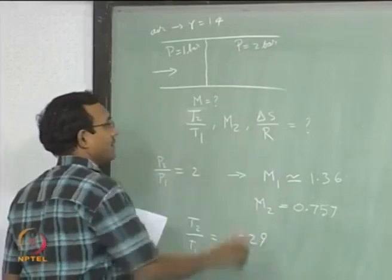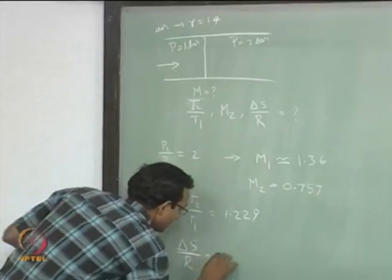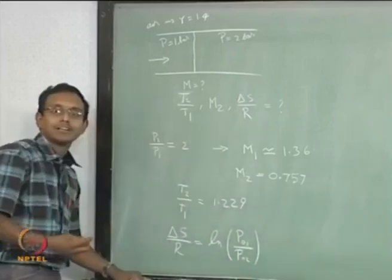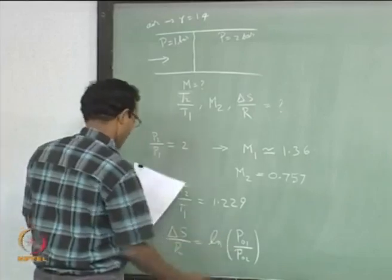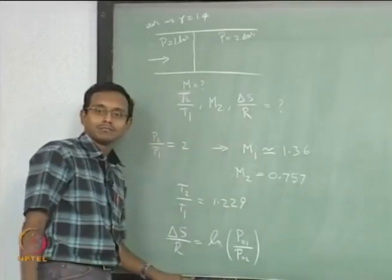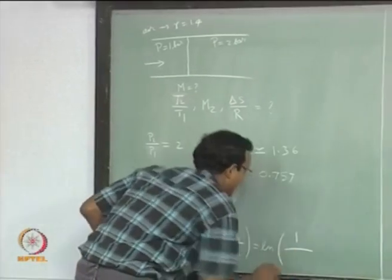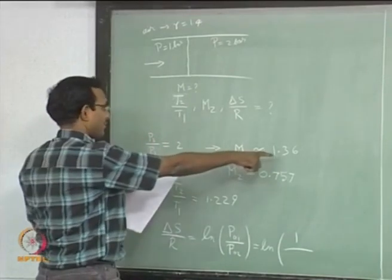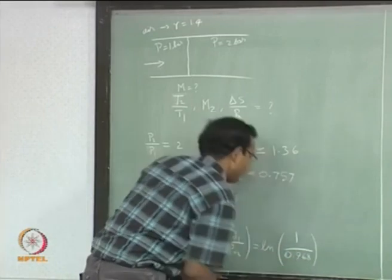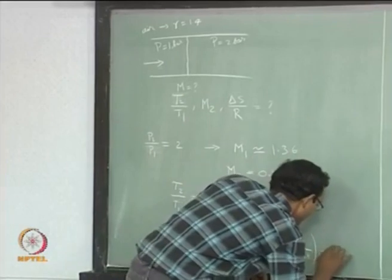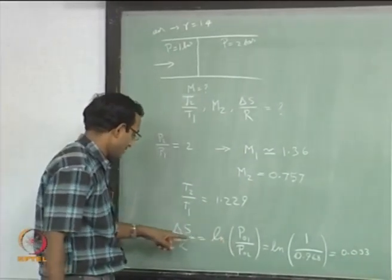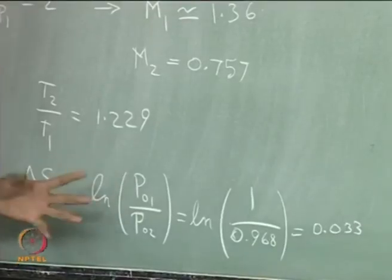Now I want ΔS/R. What is ΔS/R? It equals log(P01/P02) — we proved this already. So I want to find P01/P02. My compressible flow tables give P02/P01, so I write it as log of 1 divided by that ratio. That ratio for this Mach number with gamma equal to 1.4 comes out to be 0.968. So my ΔS/R equals 0.033. That is your answer. I can also write ΔS/R = −log(P02/P01) and get the same answer.